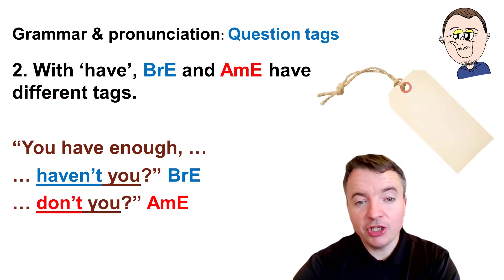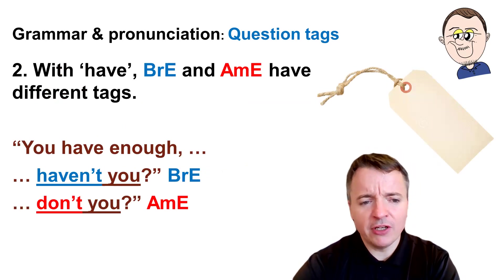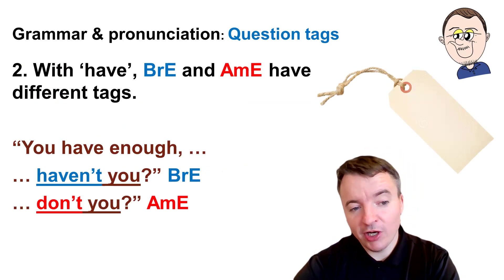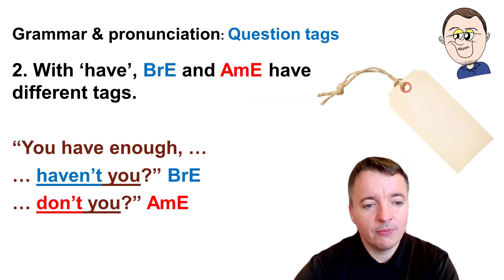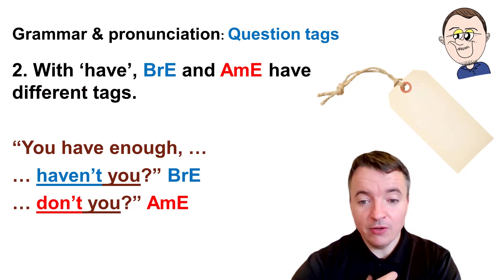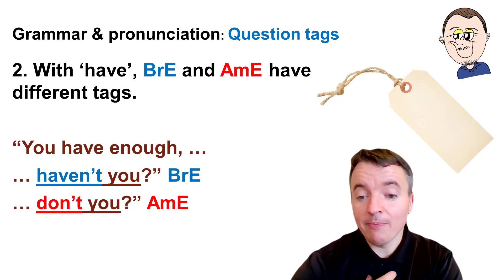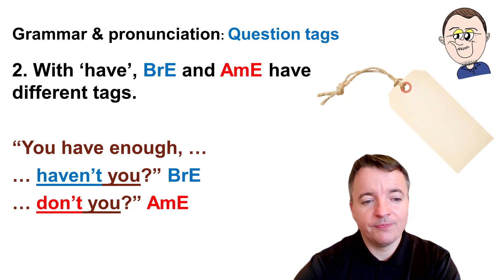British English and American English — with 'have', there are different tags. British English: You have enough, haven't you? American English: You have enough, don't you? I'm British, but I personally use the American English myself — you have enough, don't you?